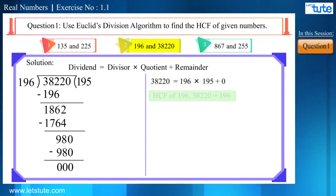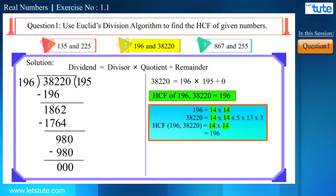So, we can write 38,220 as 196 into 195 plus 0. So, the HCF of these two numbers will be 196. Friends, as shown here, you can verify your answer by using the factorization method. But, you can observe here that we got the HCF of these numbers very easily. And hence, Euclid division algorithm came into picture. So, here, we can see that this method is suitable to find the HCF of large numbers.